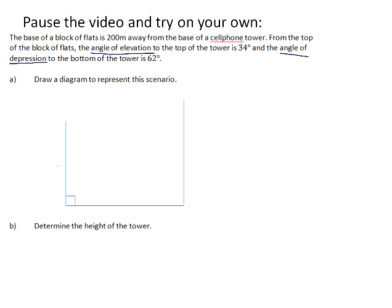Whenever we are dealing with angles of elevation and depression, we need a horizontal line between the two objects. The angle of elevation is when the line of sight is above the horizontal line. So here, this angle of elevation is 34 degrees. And then we need a line of sight from the top of the block of flats to the base of the tower. And that angle of depression is 62.